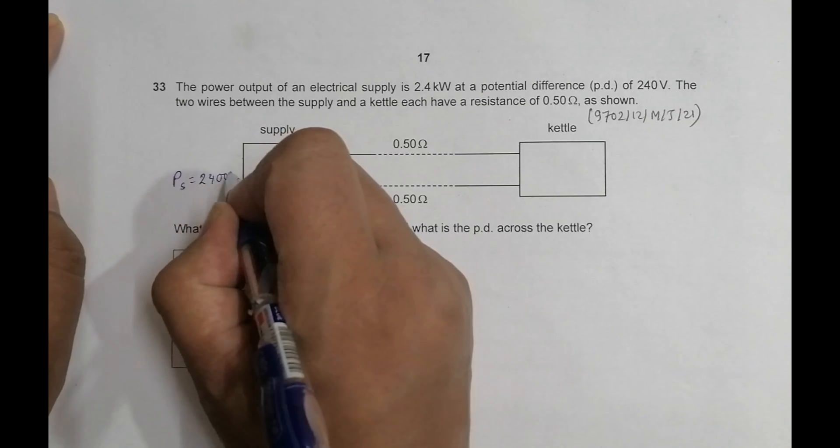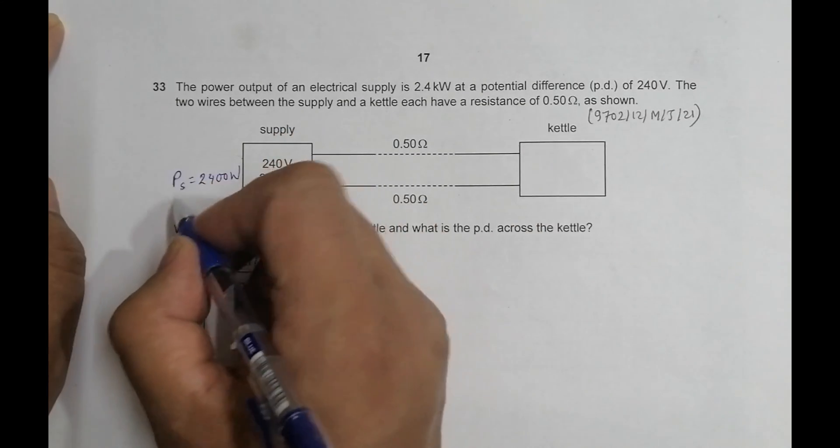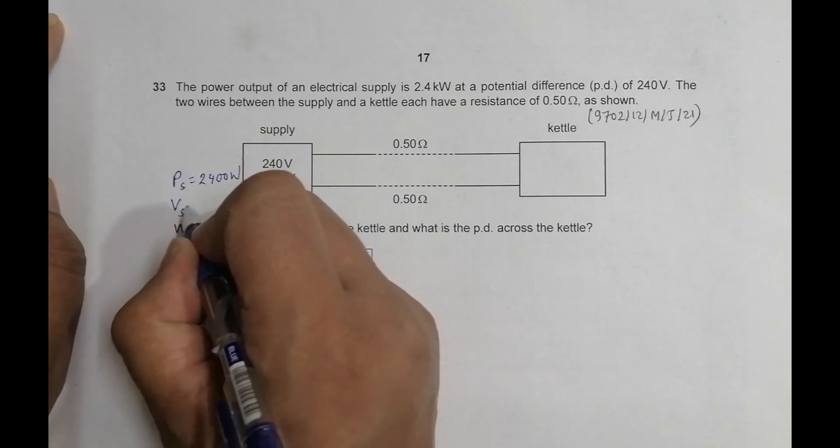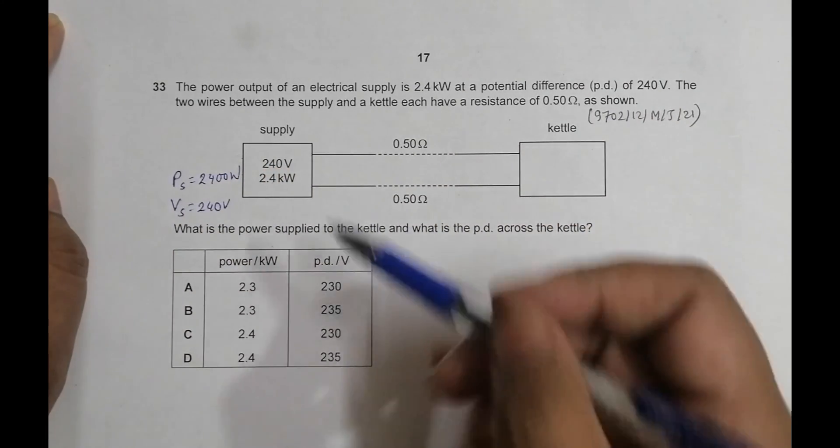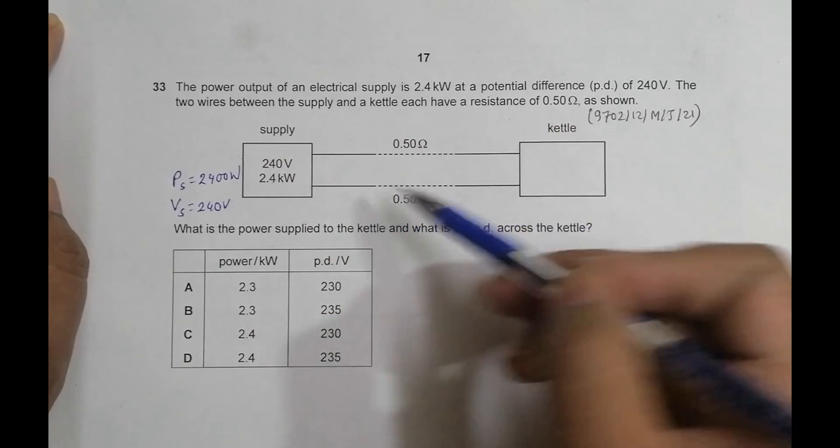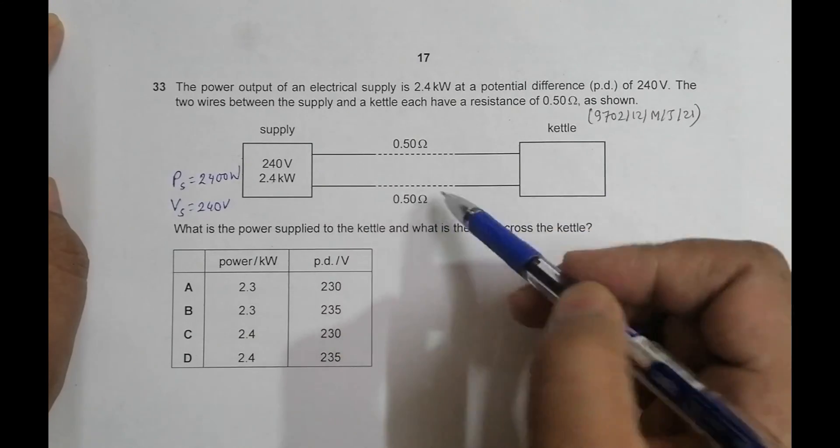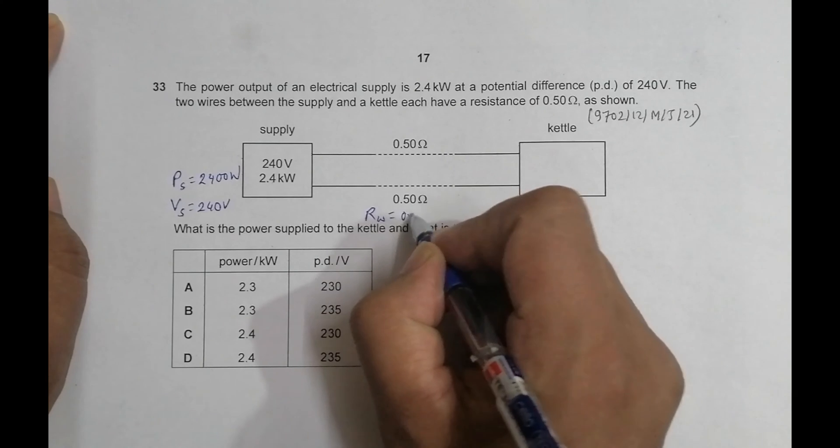So the power of the supply is equal to 2.4 kilowatts. I write it as 2400 watts so that it becomes easy for calculations. The V of the source is equal to 240 volts. The two wires between the supply and kettle each have a resistance of 0.5 ohms.